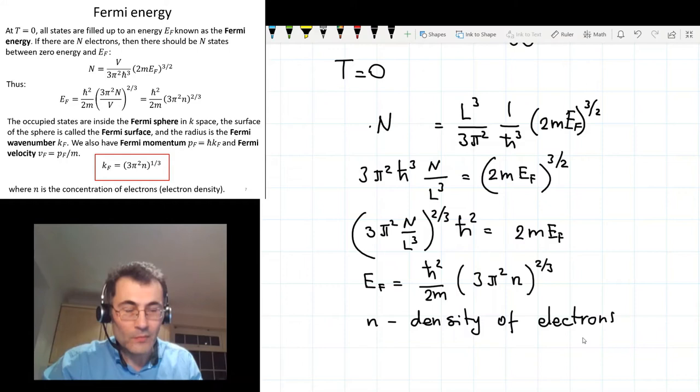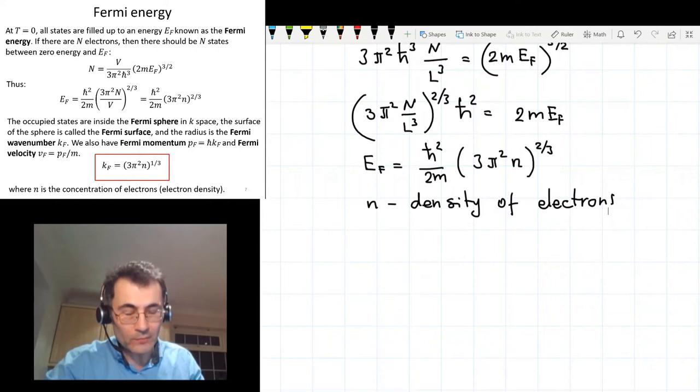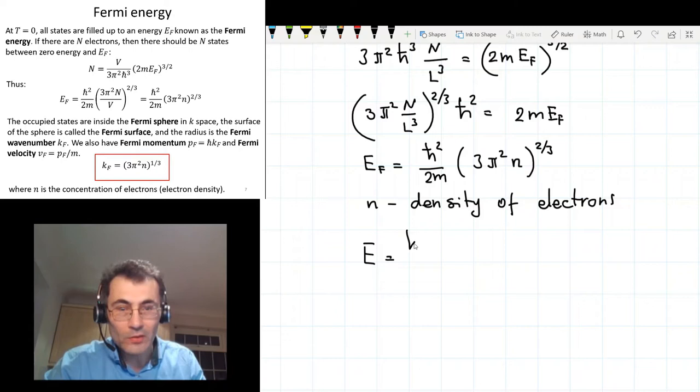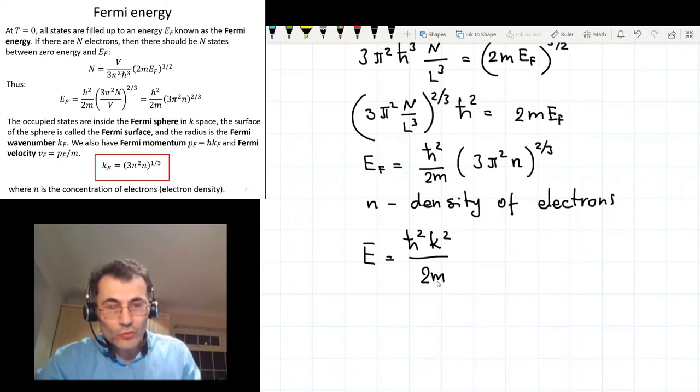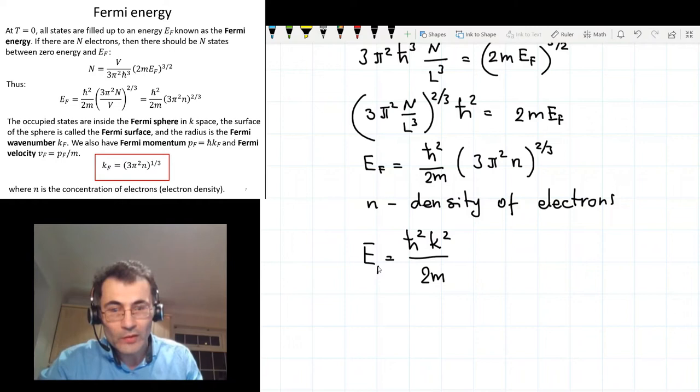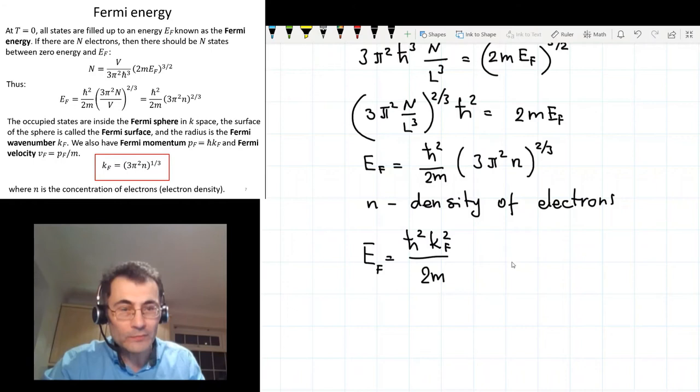Okay, now let's recall how energy is related to the k vector. So energy is ℏ²k² divided by 2m. So now I can introduce also the Fermi wave vector. If I put in this expression E to be E_Fermi, then k becomes k_Fermi. If I compare last two expressions, then I will see immediately this k_Fermi squared is my expression in brackets to the power 2 thirds. So the Fermi wave vector will be simply the same expression but to the power 1 third. So k_Fermi is 3π²n to the power 1 third.